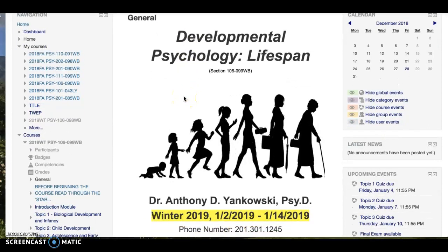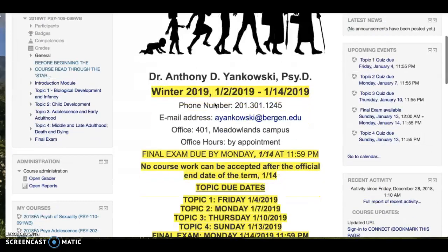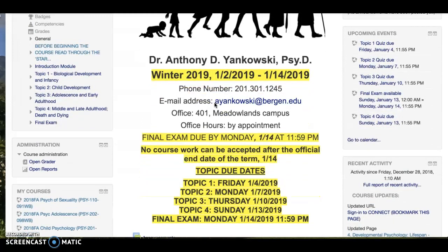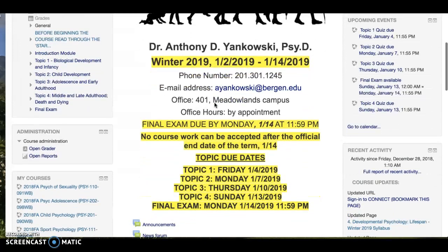You can see here this is just a template — I'm using my developmental psychology lifespan course. The course number is verified here. And typically what you'll notice as you scroll down the page in Moodle is an organization of contact information.